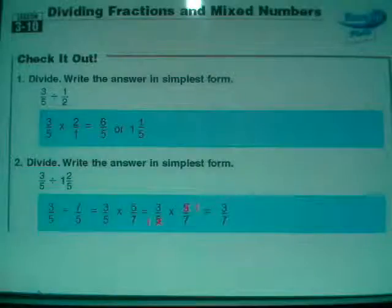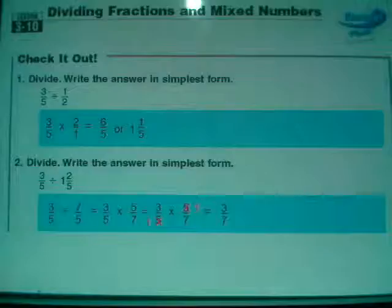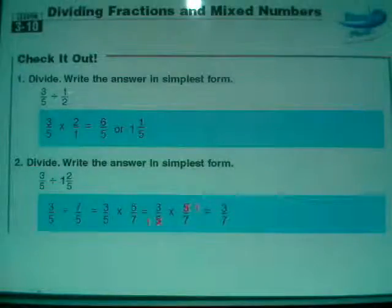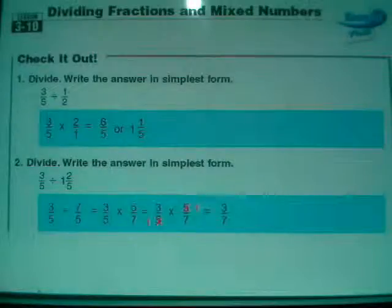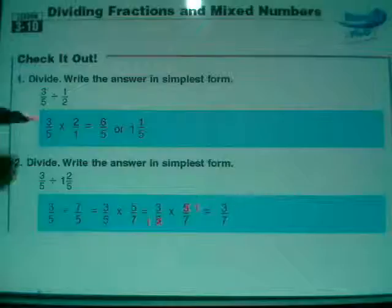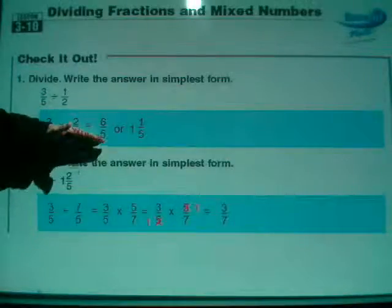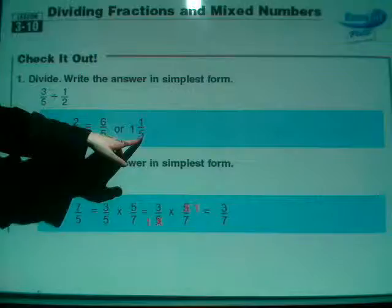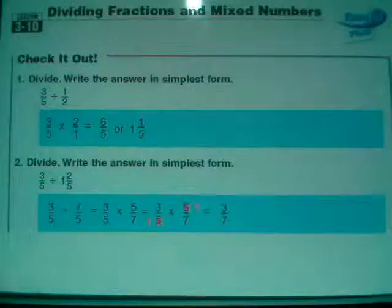Let's go ahead and finish this off by looking at the check it out examples. Number 1: 3 fifths divided by 1 half. What do we need to do? Two things: change the division sign into multiplication, and flip the second fraction. So this is 3 fifths times 2 over 1. 3 times 2 is 6, and 5 times 1 is 5. 6 fifths is the equivalent of 1 and 1 fifth.